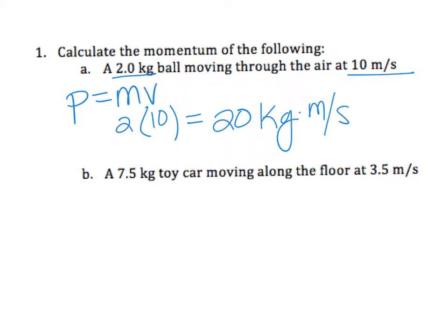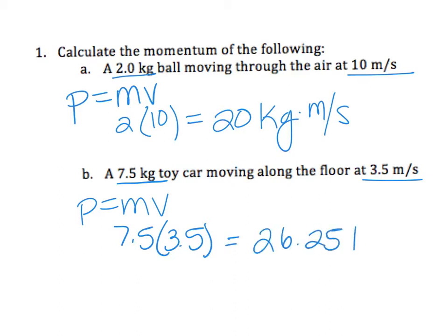For B, we have a 7.5 kg toy car moving along the floor at 3.5 m/s. We have our mass and velocity, so we'll plug that into our momentum formula. We have 7.5 times 3.5, and when we multiply that in the calculator, we end up with 26.25 kg·m/s. All right, so that's it for question one.